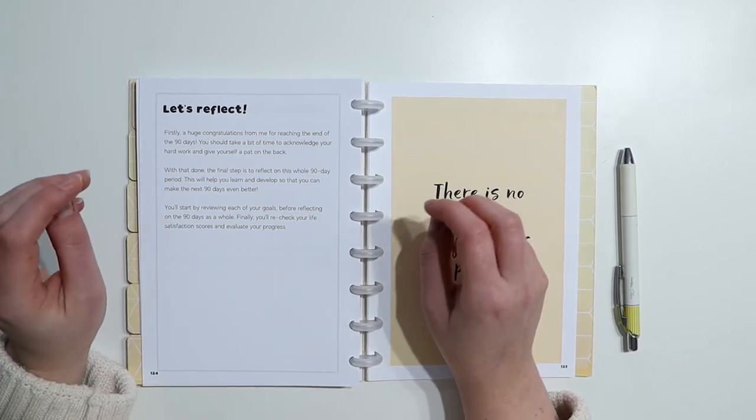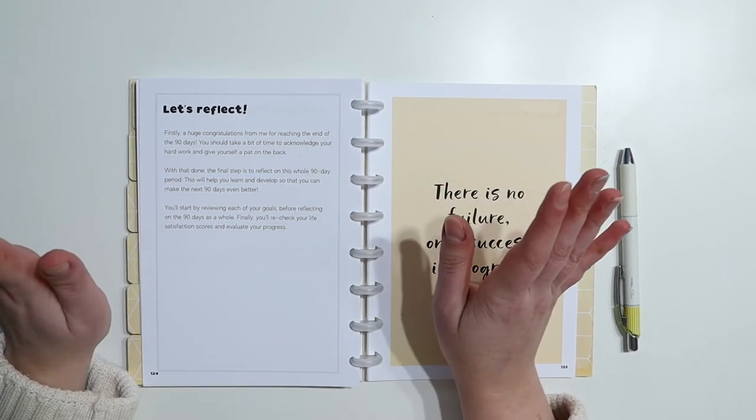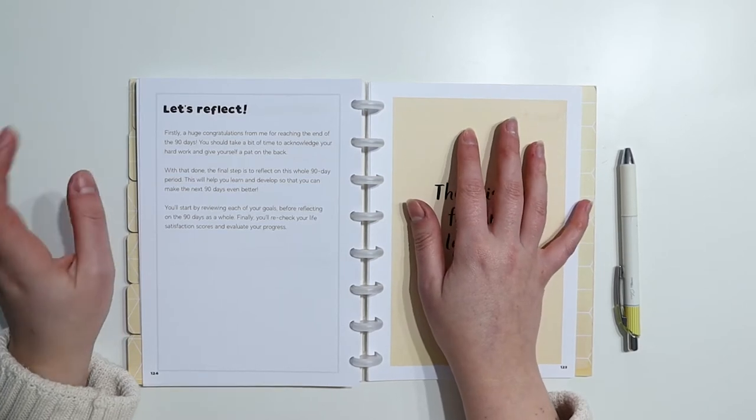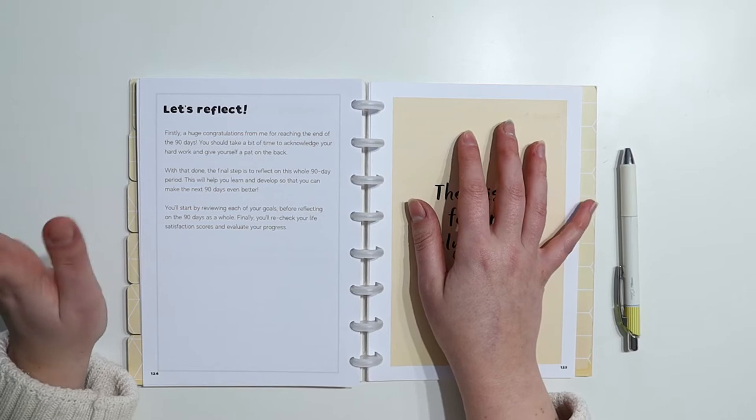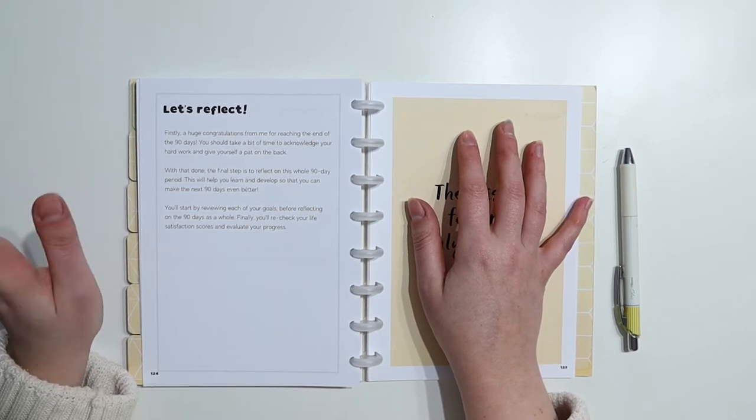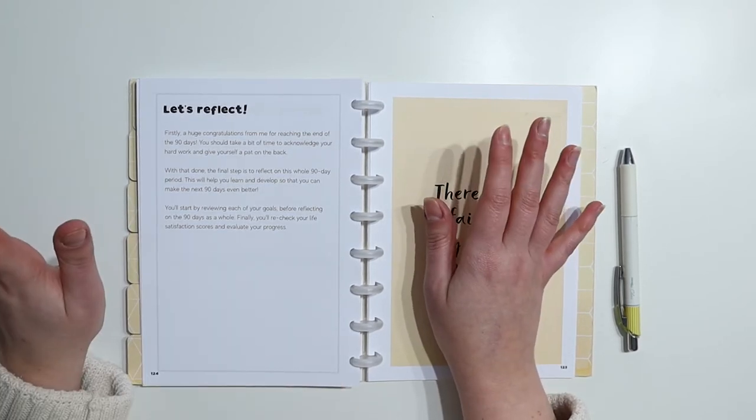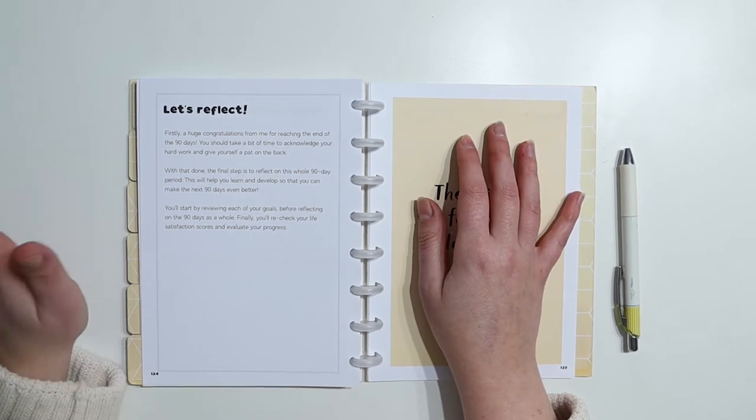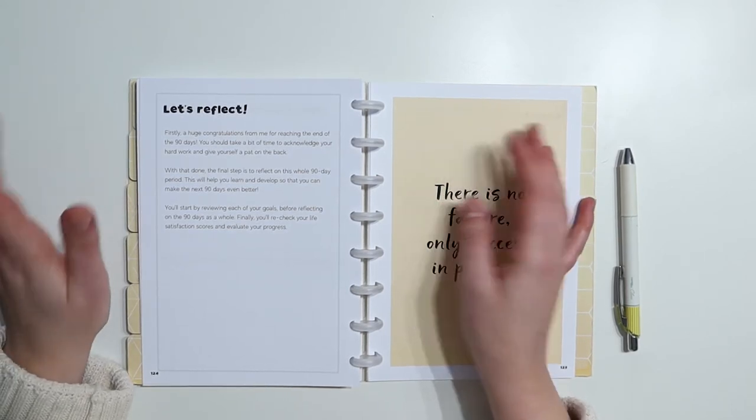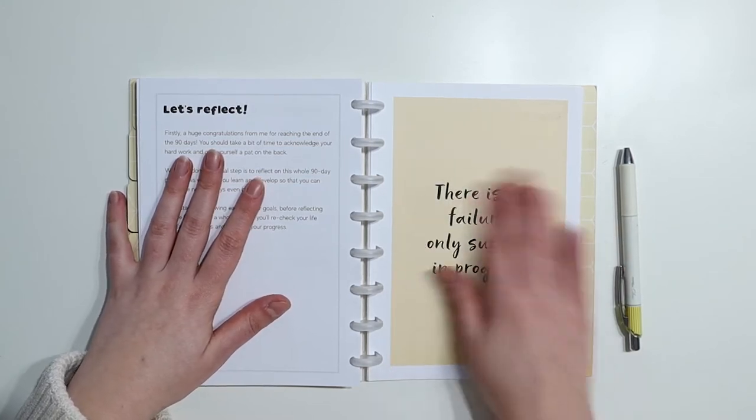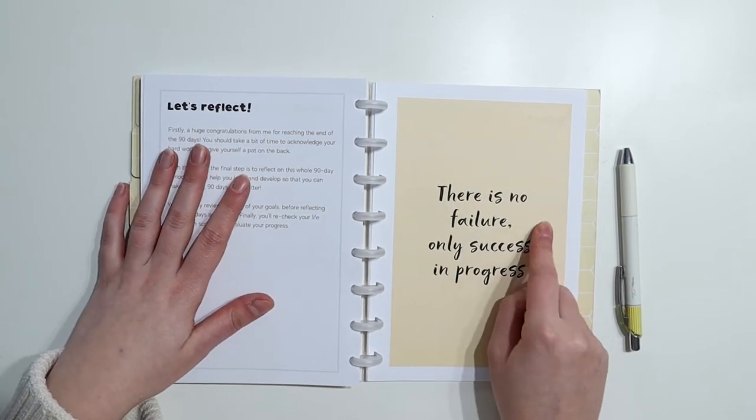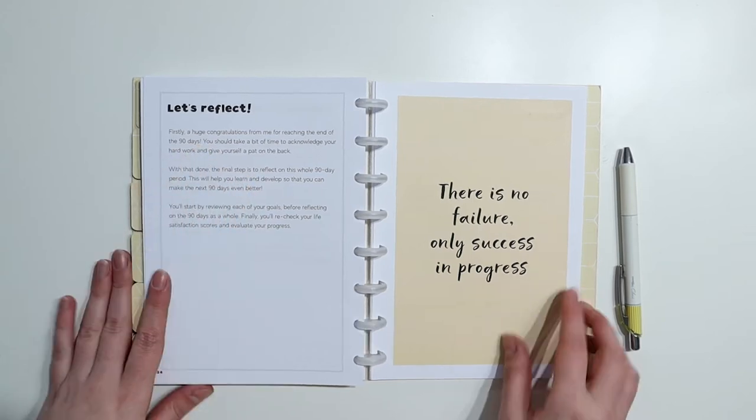With that done, the final step is to reflect on this whole 90 day period. This will help you learn and develop so that you can make the next 90 days even better. You'll start by reviewing each of your goals before reflecting on the 90 days as a whole. Finally, you'll recheck your life satisfaction scores and evaluate your progress. And then there's a nice quote here that says, there is no failure, only success in progress.